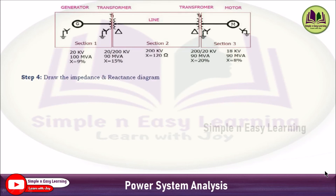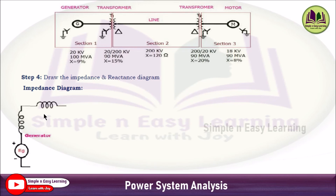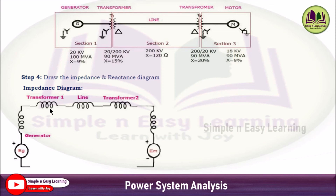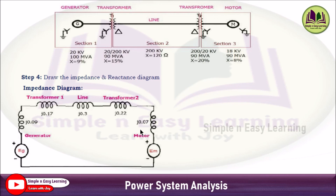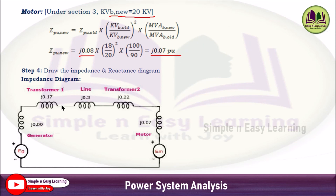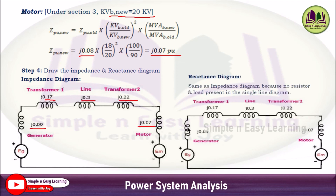Step 4: draw the impedance and reactance diagram. From the single line diagram, the impedance diagram includes the generator's induced EMF with its reactance, followed by transformer T1 reactance, line reactance, transformer T2 reactance, and the motor reactance with the motor's back EMF. Substituting the calculated per unit values: generator j0.09, transformer T1 j0.17, line j0.3, transformer T2 j0.22, and motor j0.07.